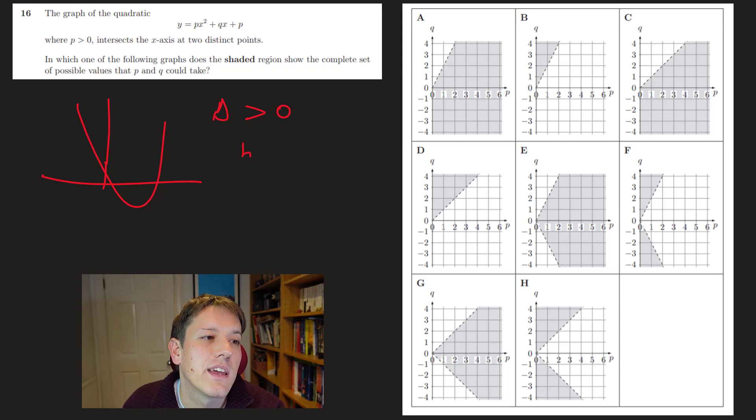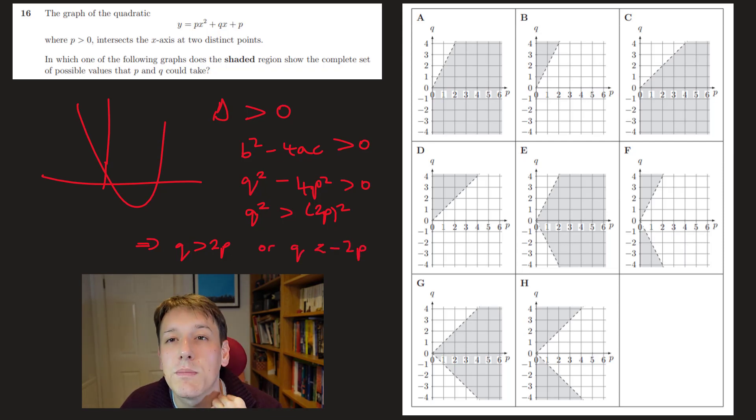So the discriminant here, b squared minus 4ac, has to be bigger than zero. So in here that's just q squared minus 4p squared has to be bigger than zero. So I need q squared to be bigger than 4p squared. So that means that either q is bigger than 2p, because 4p squared is 2p all squared. So for q squared to be bigger than 2p squared, we either need q is bigger than 2p, or q is less than minus 2p.